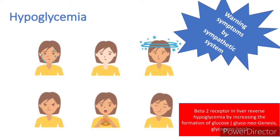In a hypoglycemic state, beta-2 receptors in the liver reverse hypoglycemia by increasing glucose formation — they stimulate gluconeogenesis and glycogenolysis, breaking glycogen and producing new glucose molecules. The warning symptoms produced in hypoglycemia, such as tachycardia and palpitations, are via beta-1 receptors — because beta-1 is on the heart (one heart) and beta-2 is in the lungs (two lungs).